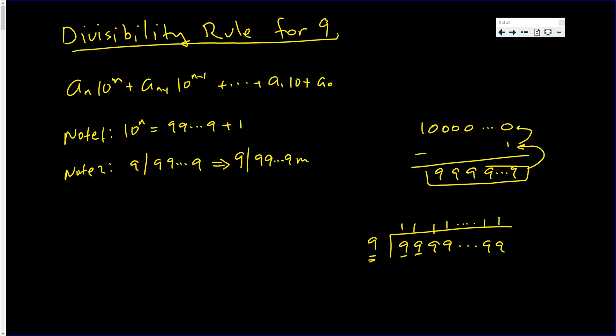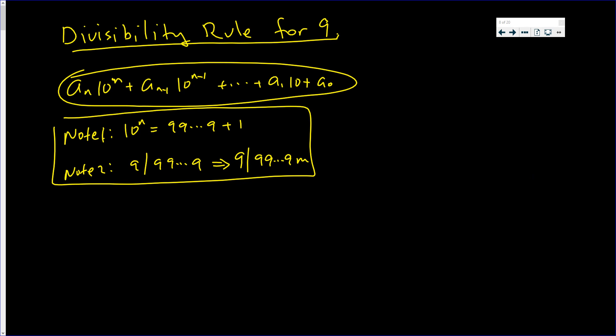Which implies that 9 divides a string of 9 times n, a multiple of 9. So with these two notes we can derive the rule for 9 to divide that sum. So now a_n times 10^n plus a_(n-1) times 10^(n-1) all the way down to a_1 times 10 plus a_0.